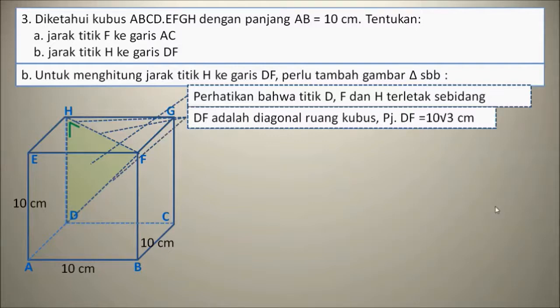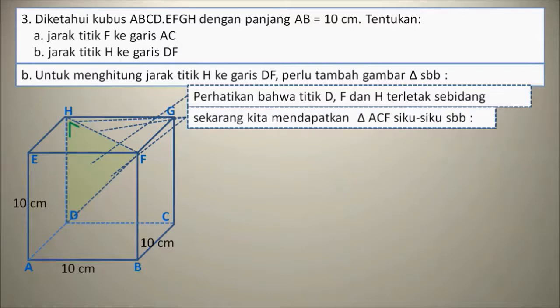DF adalah diagonal ruang kubus. Panjang DF sama dengan 10 akar 3, ingat rumusnya, karena panjang rusuk kubus adalah 10 cm. Sekarang kita mendapatkan segitiga DHF, yaitu segitiga siku-siku, seperti gambar berikut.